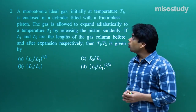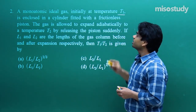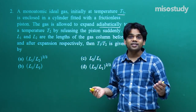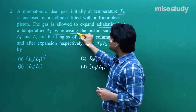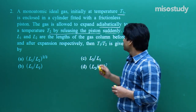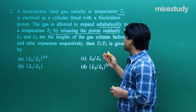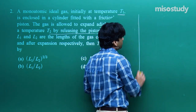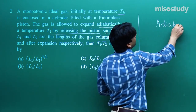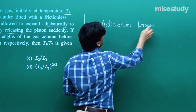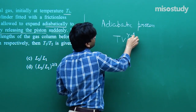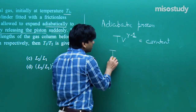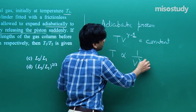Question number two: A monatomic ideal gas initially at temperature T1 is enclosed in a cylinder fitted with a frictionless piston. The gas is allowed to expand adiabatically to temperature T2 by releasing the piston suddenly. If L1 and L2 are the lengths of the gas column before and after expansion respectively, find T1 by T2. For an adiabatic process we use TV^(γ−1) = constant.